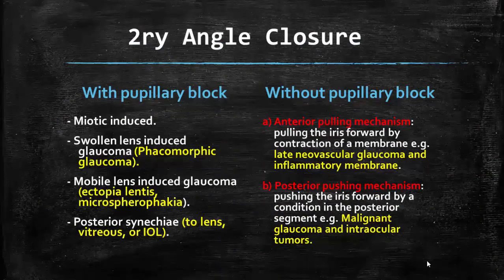Secondary angle closure glaucoma is classified into two types: with pupillary block and without pupillary block. With pupillary block, many causes are found, like miotic-induced glaucoma, swollen lens-induced glaucoma as in the case of phacomorphic glaucoma, and mobile lens-induced glaucoma as in the case of ectopia lentis and microspherophakia.